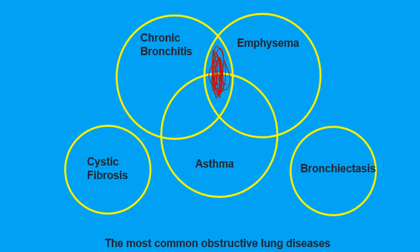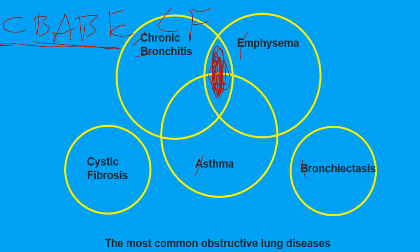All obstructive diseases are covered by what we call CBaBe CF: Chronic Bronchitis, Asthma, Bronchiectasis, Emphysema, and Cystic Fibrosis. If a condition is not one of the CBaBe CFs and you're asked whether a patient is obstructive or restrictive, if their condition is not in CBaBe CF, in general it's most likely restrictive, which means low volumes.